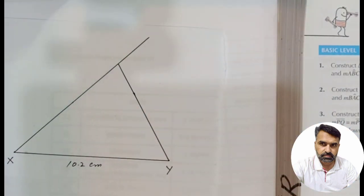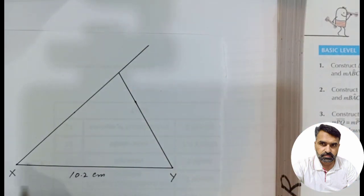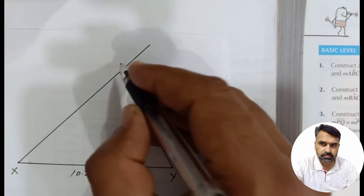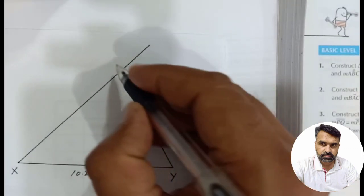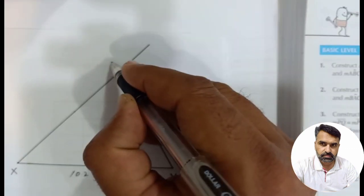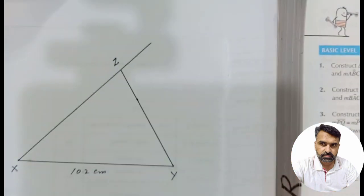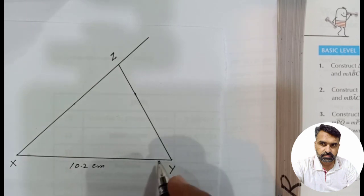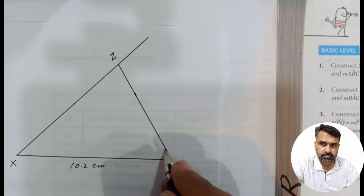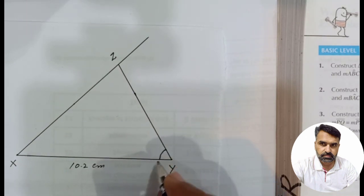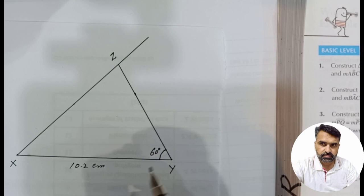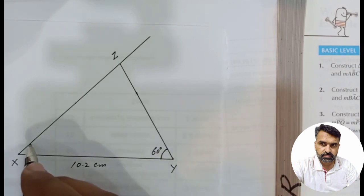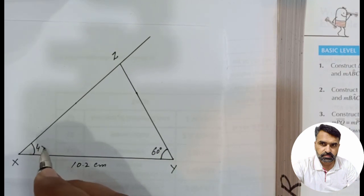The point where the two arms meet is Z. This point is X, this point is Y, and the point where the two arms intersect is Z. This angle is 60 degrees at Y, and this angle is 45 degrees at X.